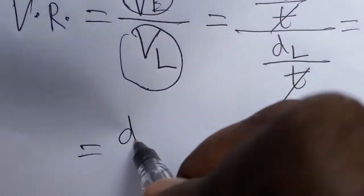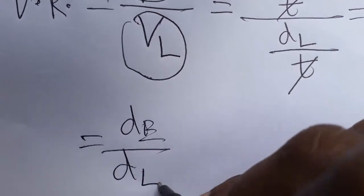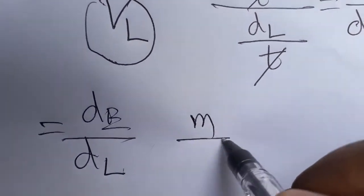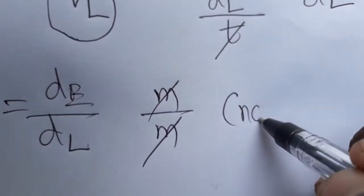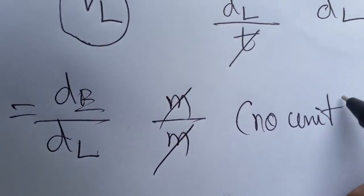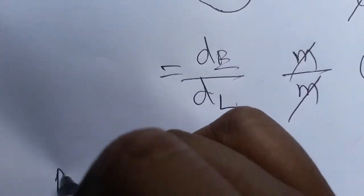Distance of effort arm by distance of load arm - that means it's meter by meter. Distance or displacement will be taken as meter. That means no unit for velocity ratio. And also mechanical advantage.